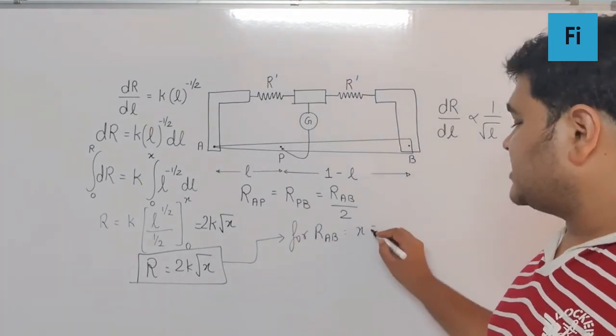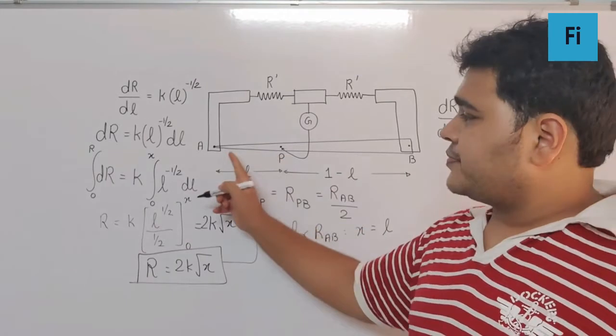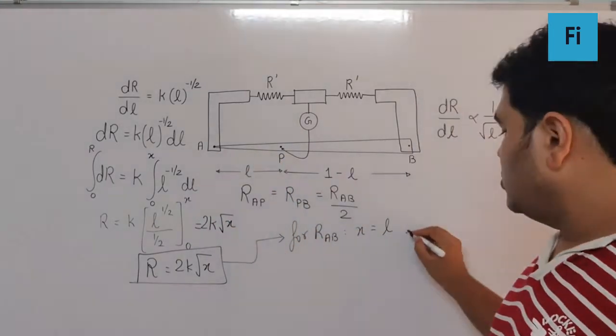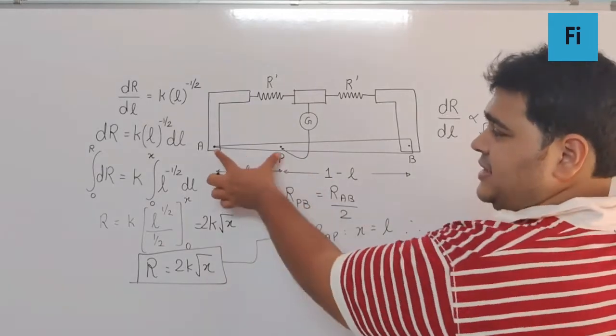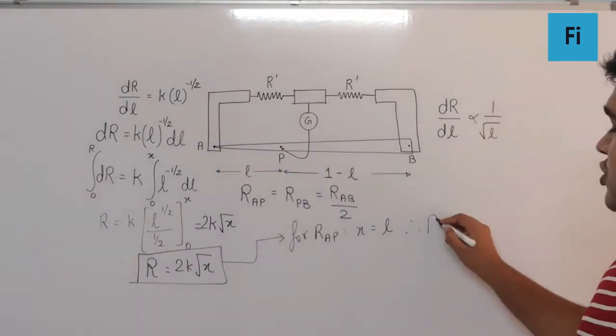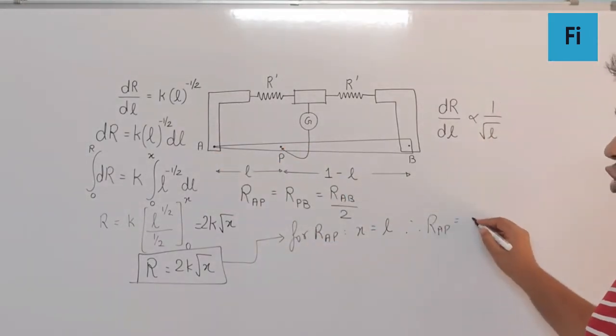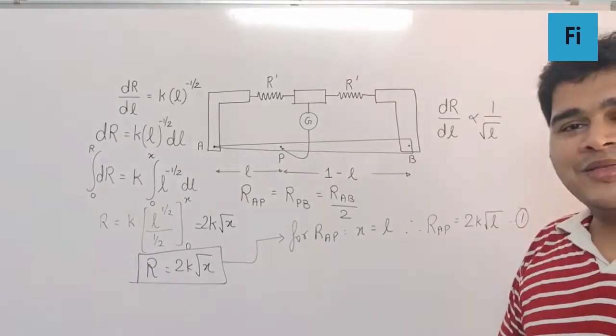So R_AP is going to be 2k√L. That's my equation number 1.